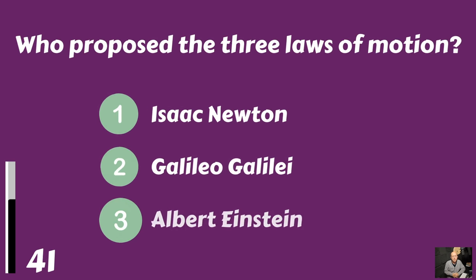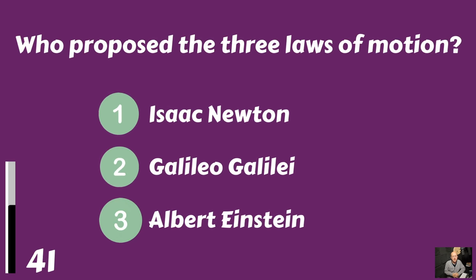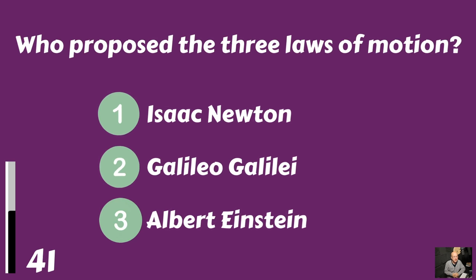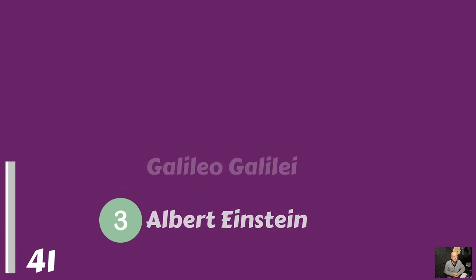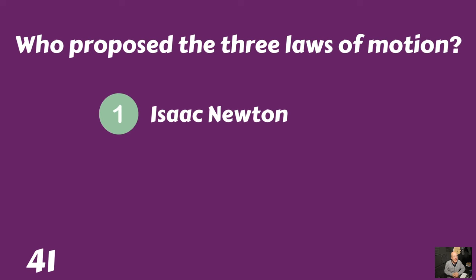Who proposed the three laws of motion? Was it Isaac Newton, Galileo Galilei, or Albert Einstein? That would be Isaac Newton.